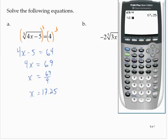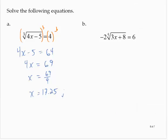The cube root of 4 times 17.25 minus 5, and close off the cube root. It does give us 4, so that's a good solution.